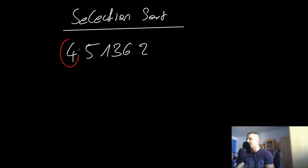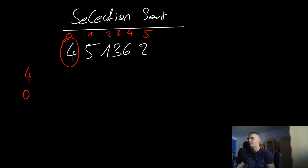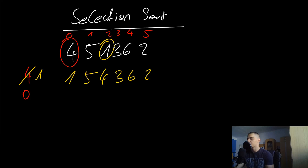At the beginning we assume the first element is our minimum. So four is our minimum value and zero is our minimum index. We then go through the list looking for smaller elements. Five is larger so we skip it. When we reach one, it's smaller than four, so the new minimum value is one and its current index is two.